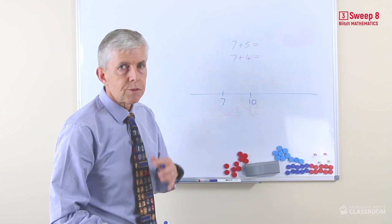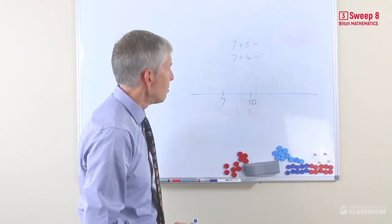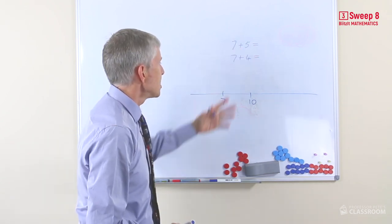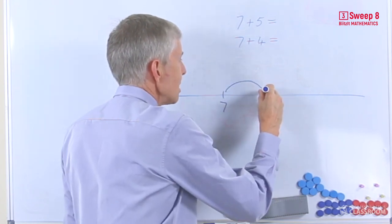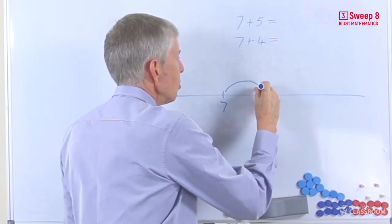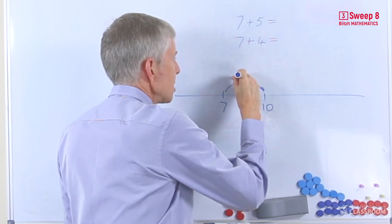The other resource we recommend for these remaining facts is, of course, the open number line. Starting with the first one, seven plus five, here's seven. We're going to hop to ten as a round number along the way. Of course, that is a hop of three or plus three.